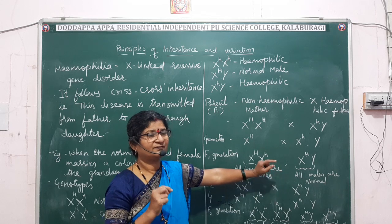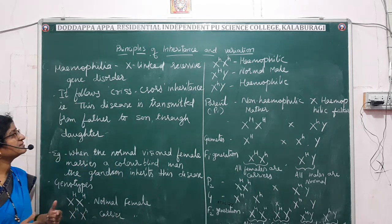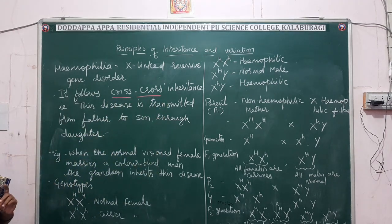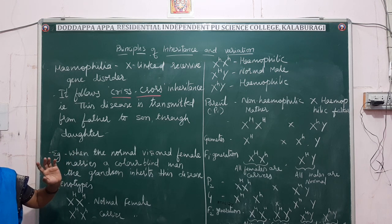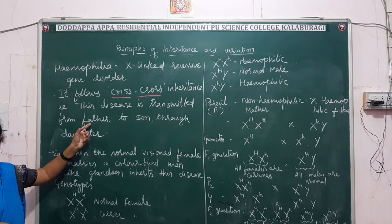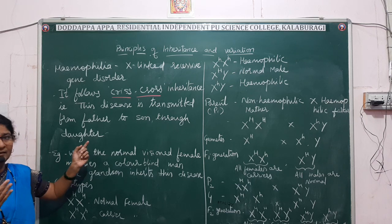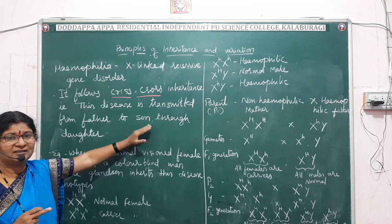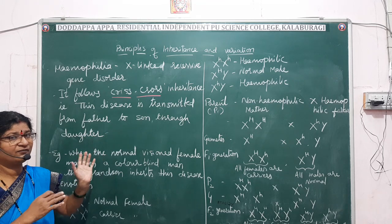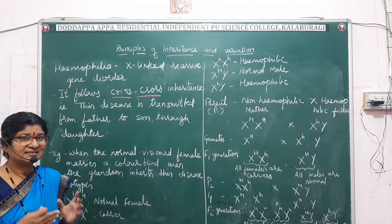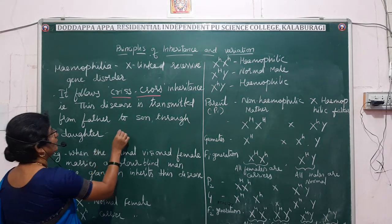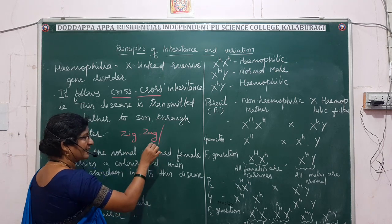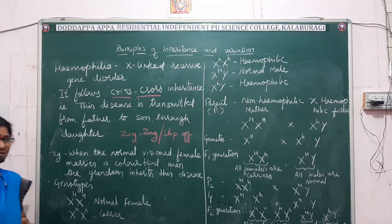Hemophilia follows criss-cross inheritance, meaning the disease is transmitted from father to grandson through the daughter, skipping one generation. That is why it is also called skip-off inheritance or zig-zag inheritance — because it follows a zig-zag pattern across generations.